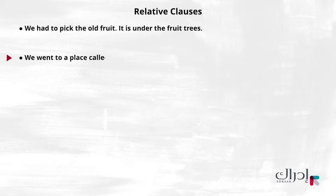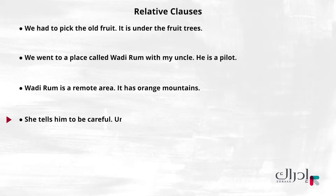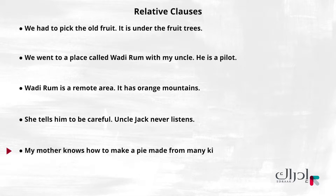We went to a place called Wadi Ram with my uncle. He is a pilot. Wadi Ram is a remote area. It has orange mountains. She tells him to be careful. Uncle Jack never listens. My mother knows how to make a pie made from many kinds of fruit. She used the dates that we picked off the trees.